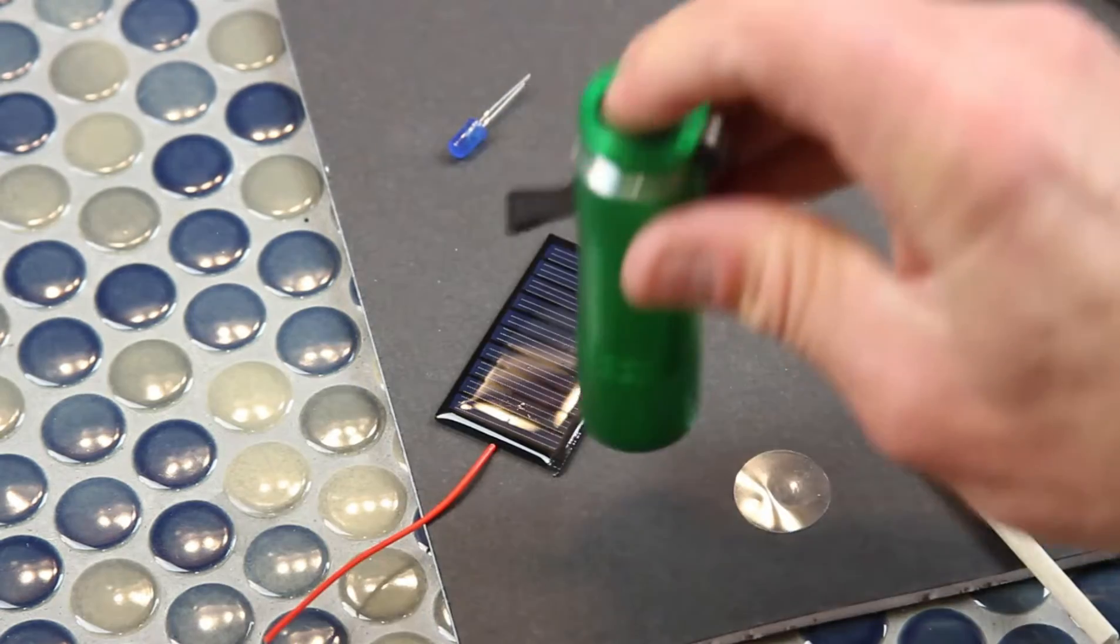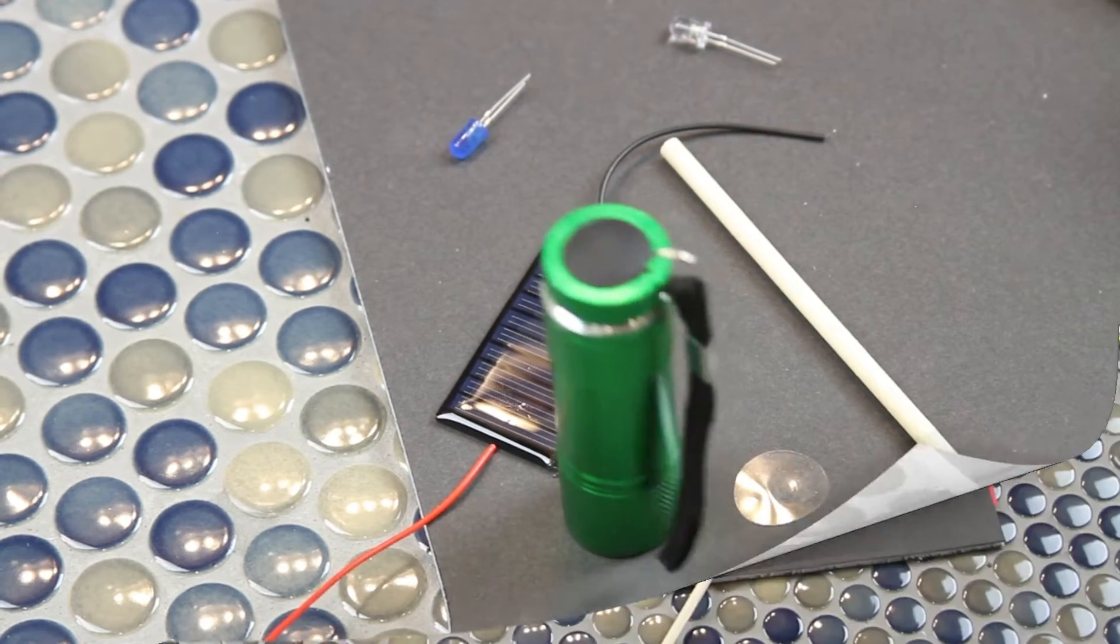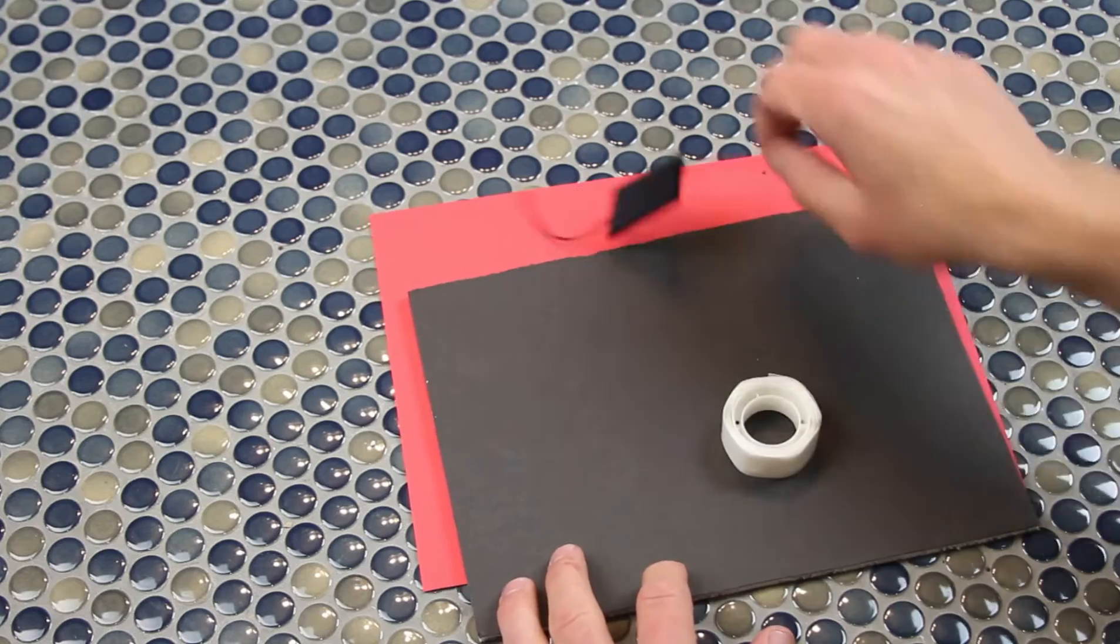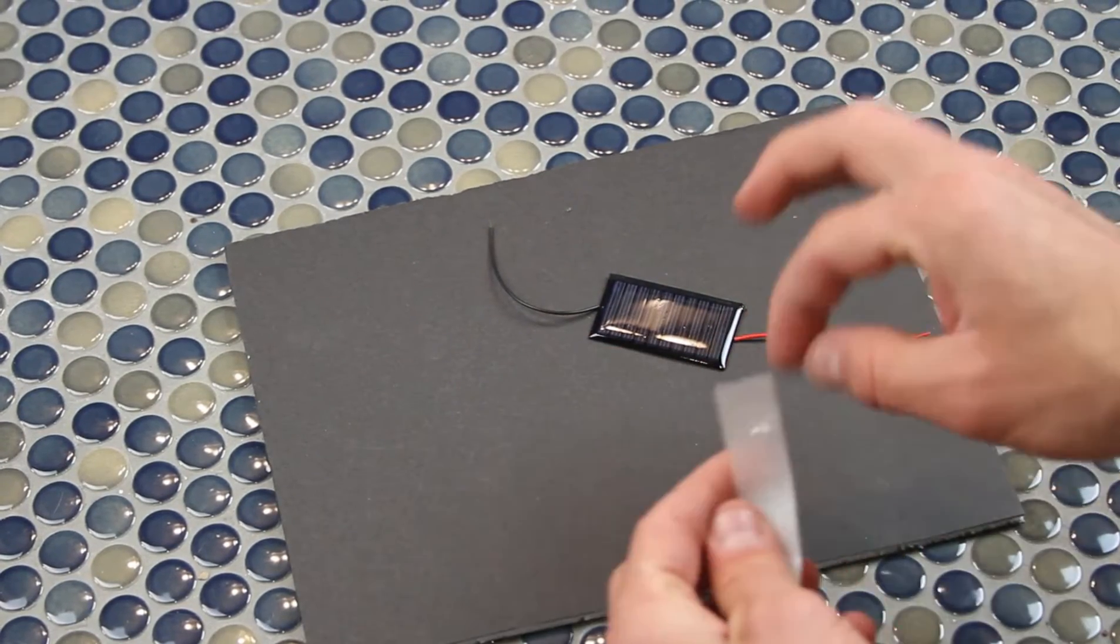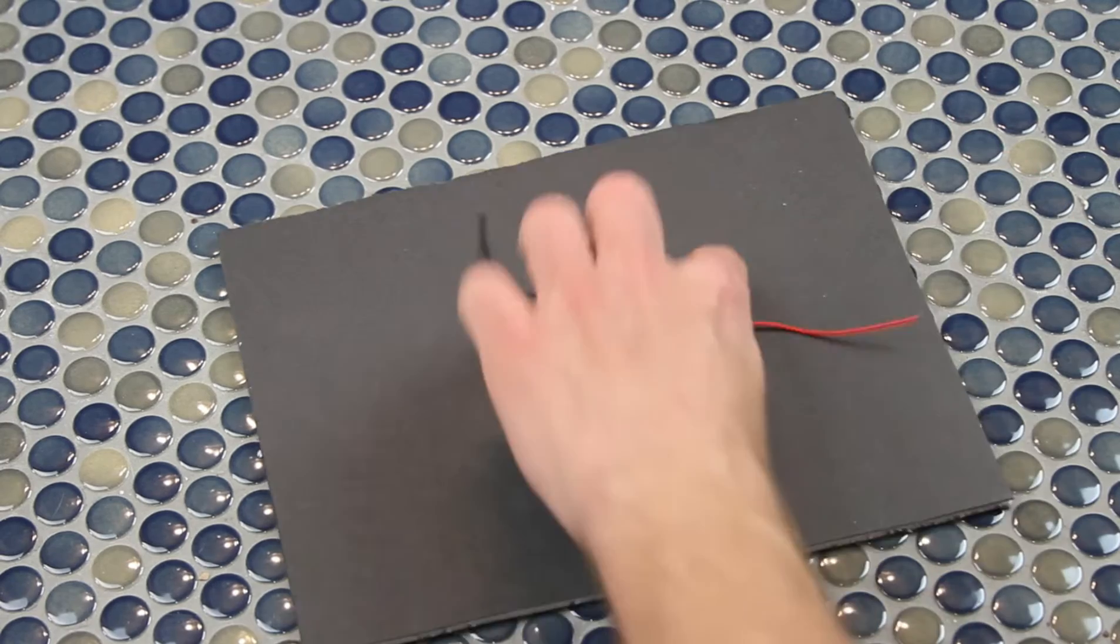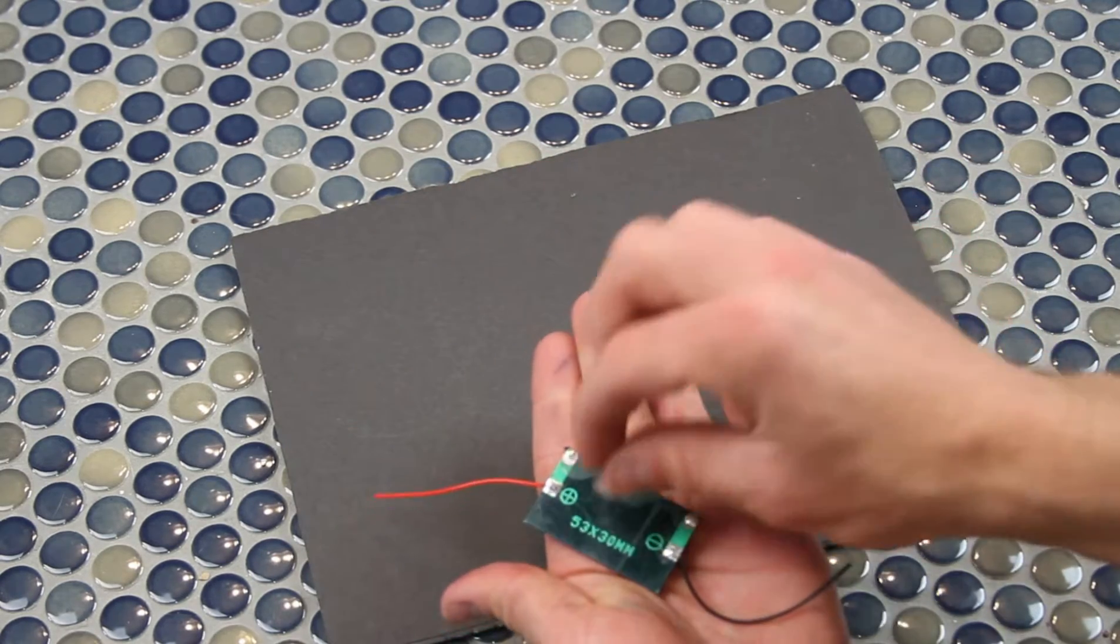Now it's time for step number one, which is to find a spot for our solar panel. We can clear everything off except the solar panel and some glue dots. Go ahead and peel a few of those off, bundle them up together, and put them on the bottom of your panel. Then stick it in the corner somewhere like shown.